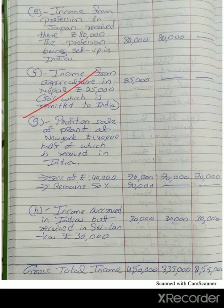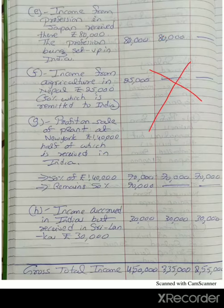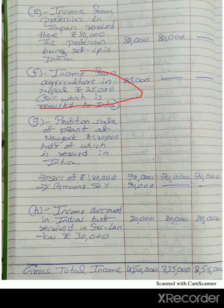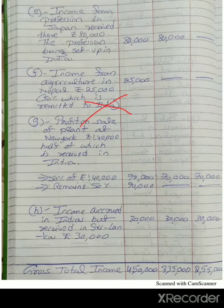Next: income from agriculture in Nepal, Rs. 25,000. It is purely foreign income, so it is only taxable for the ordinary resident in India. It is not taxable for the not ordinary resident and non-resident in India. The bracketed note that 50% is remitted to India is ignorable — it is a future, uncertain event, so it is immaterial.